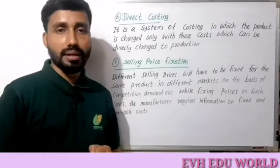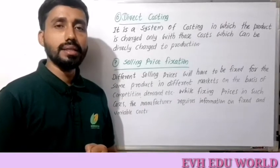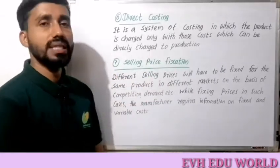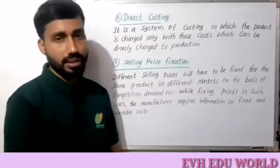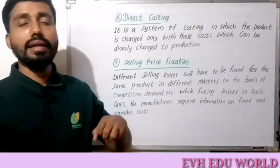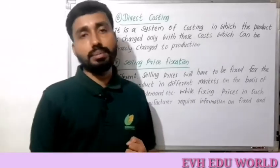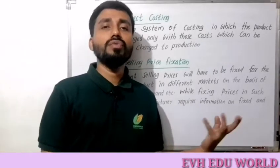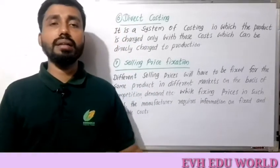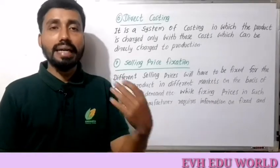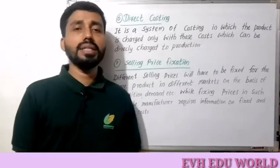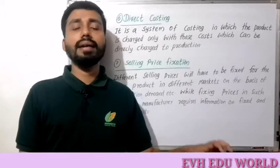What is direct costing? It is a system of costing under which the product is charged only with those costs which can be directly charged to production. We identify fixed cost and variable cost, and charge only the variable costs directly involved with the product. Direct costs include direct material, direct labor, and direct expenses.